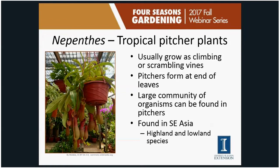Tropical pitcher plants are found in Southeast Asia and are divided into highland and lowland species. Highland species tolerate cooler temperatures and can be grown outside during summer in Illinois, brought indoors in winter. Lowland species require warmer temperatures and higher humidity, needing a greenhouse or terrarium. They generally grow as climbing or scrambling vines, with pitchers forming at the end of their leaves. A wide diversity of organisms — invertebrates, bacteria, insects — can be found living inside the pitchers, sometimes called little mini-lakes.